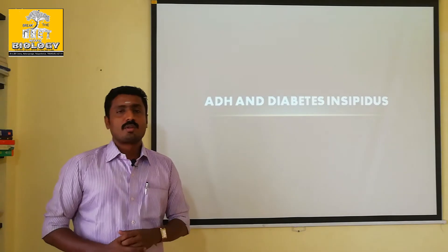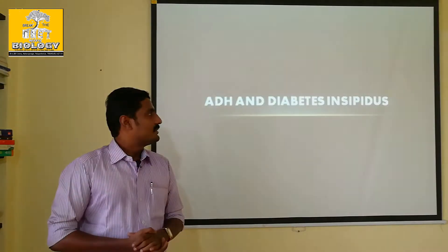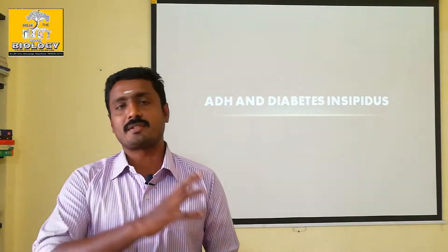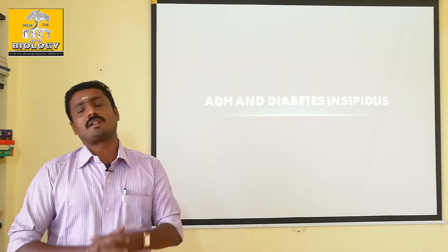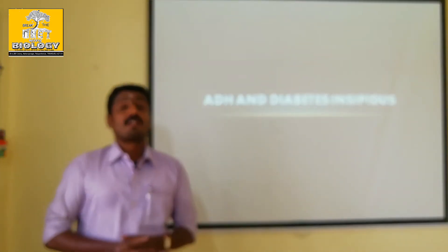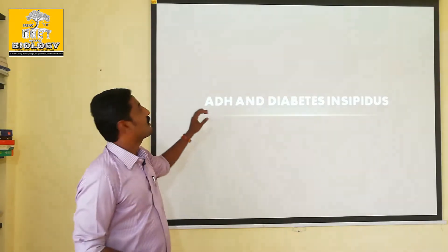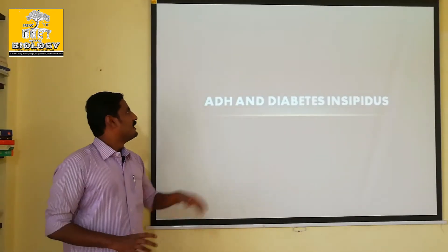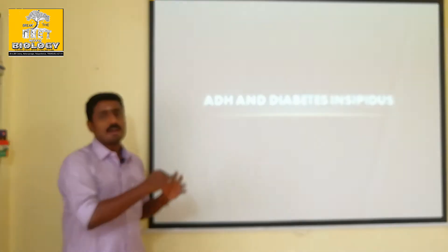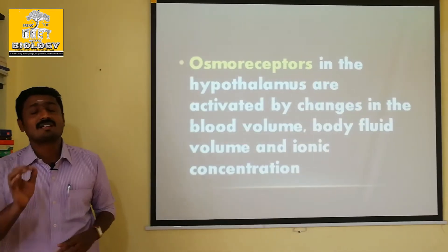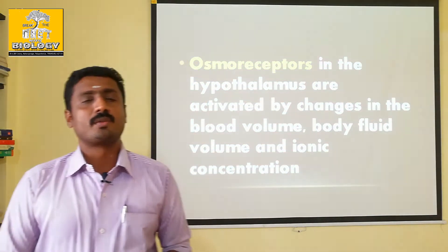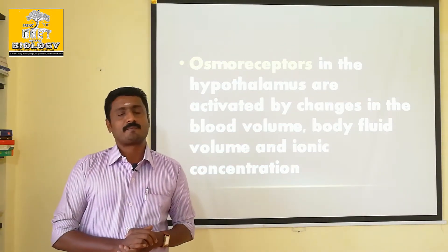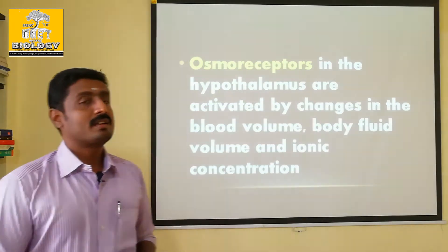Anti-Diuretic Hormone has a name called Vasopressin. Anti-Diuretic Hormone is a hormone. What is this hormone? Where is it secreted from? The pituitary. In the pituitary, there is adeno-hypophysis and neuro-hypophysis. ADH is a hormone secreted from the neuro-hypophysis.